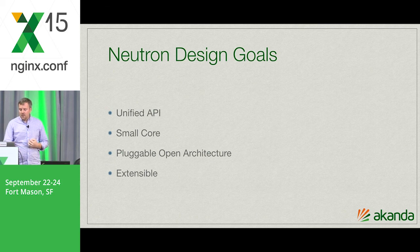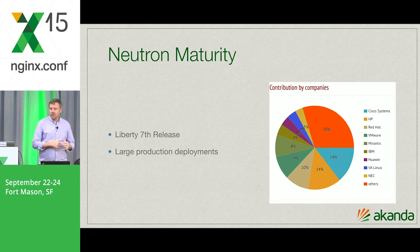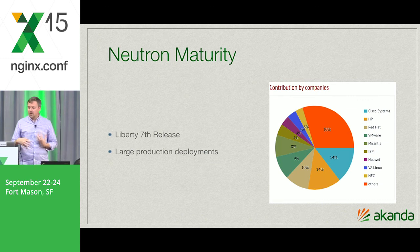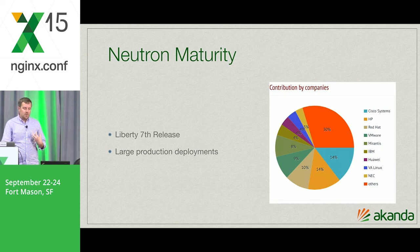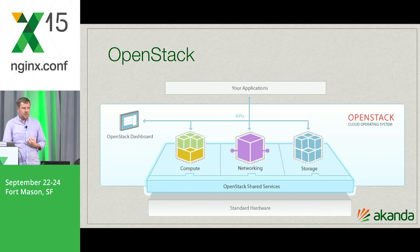The actual release of Neutron in terms of OpenStack is on its seventh release. The contributing companies are a who's who of companies you'd expect, and it's in production at large scale. Taking a look at how the pieces fit together — it's a pluggable open architecture. Underneath the hood, it's a little messy in terms of what the graph looks like, but we can zoom in on Neutron specifically, which is the components we care about.